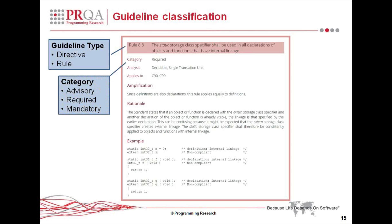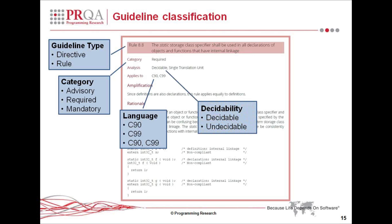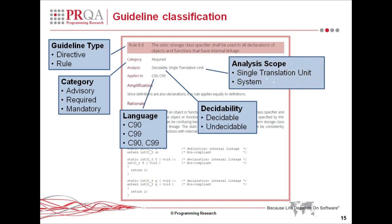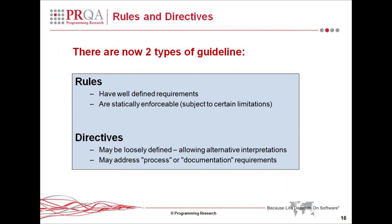Every guideline is classified under a category: either advisory, required, or mandatory. Regarding language, we now support both C90 and C99, but not every guideline is relevant to both languages. We've introduced a concept called decidability, which we'll talk about in some detail, and we've also explicitly described each guideline according to whether its analysis scope is what we call a single translation unit or whether it's a system rule.